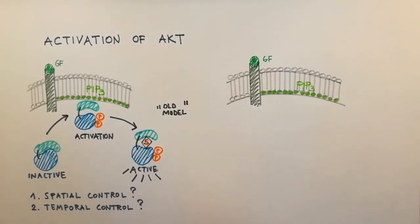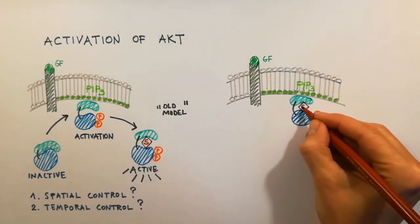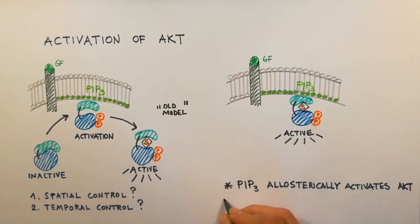We have demonstrated for the first time that AKT is allosterically activated by PIP3 engagement. Activation of AKT by PIP3 promotes substrate binding and ensures that AKT substrate complex formation is localized at PIP3-rich membranes.